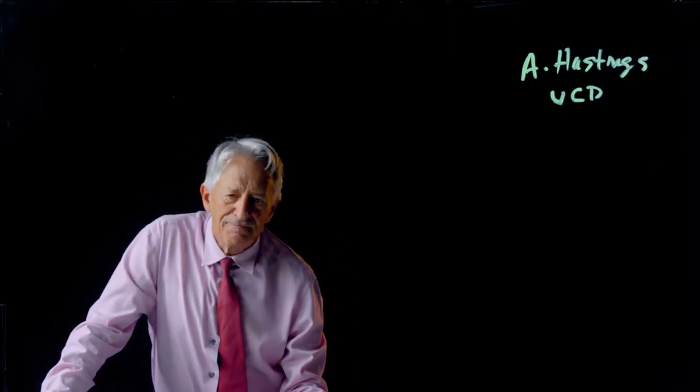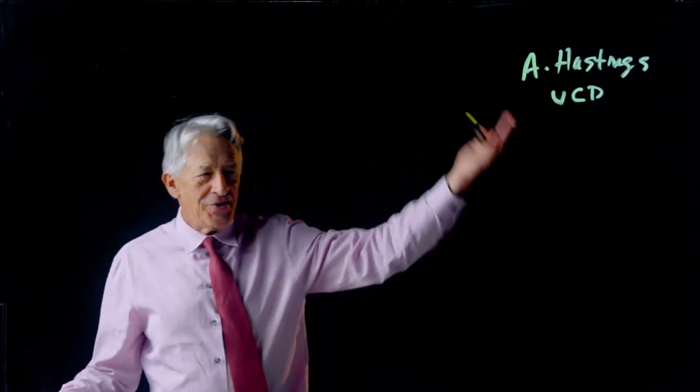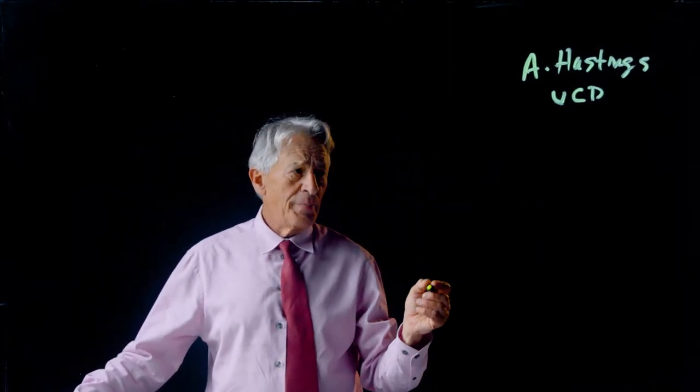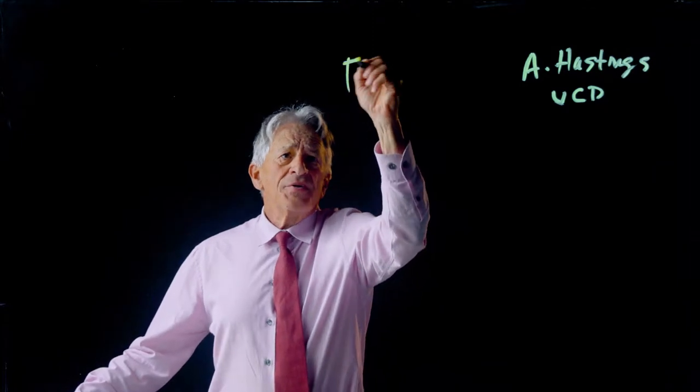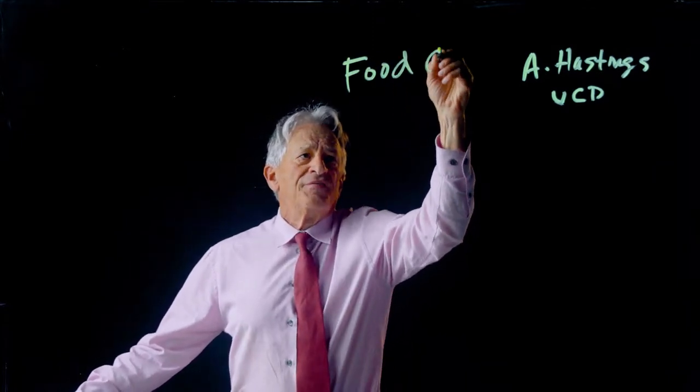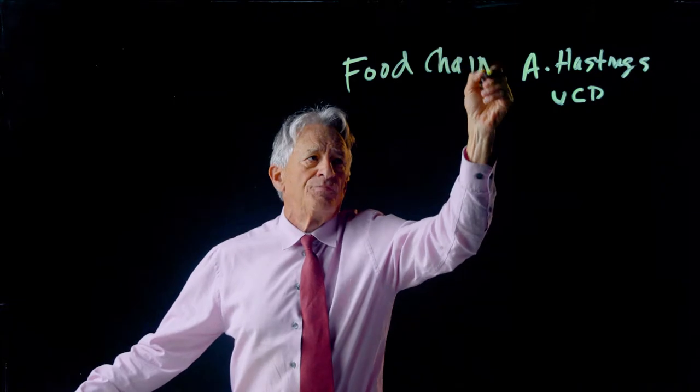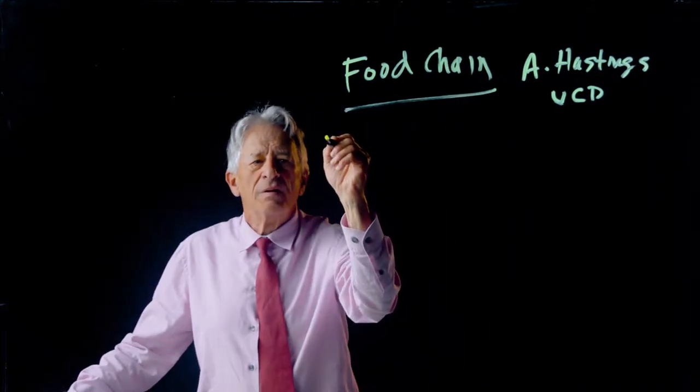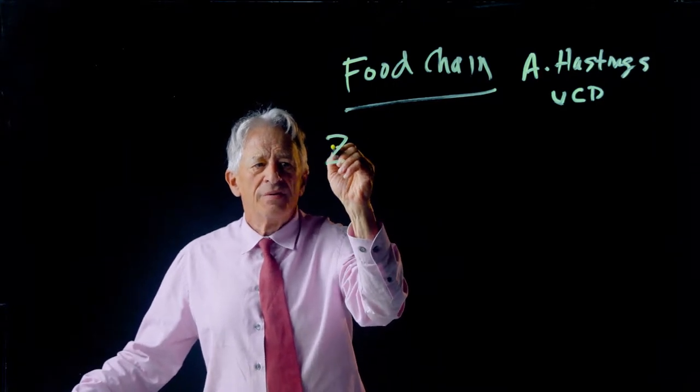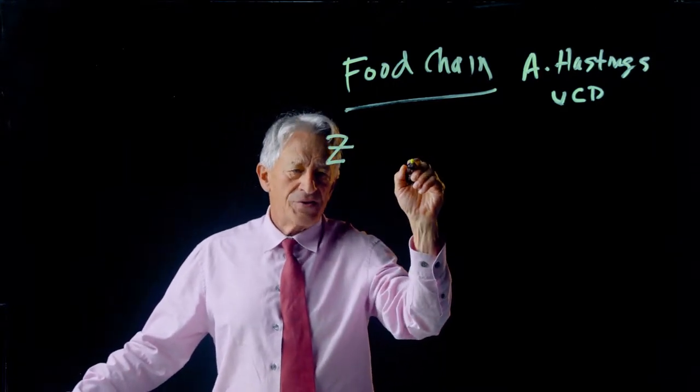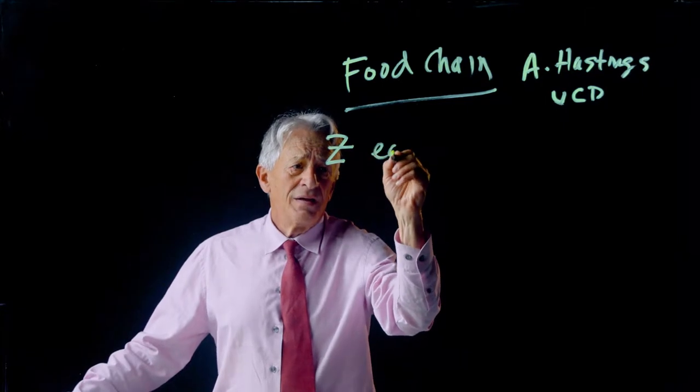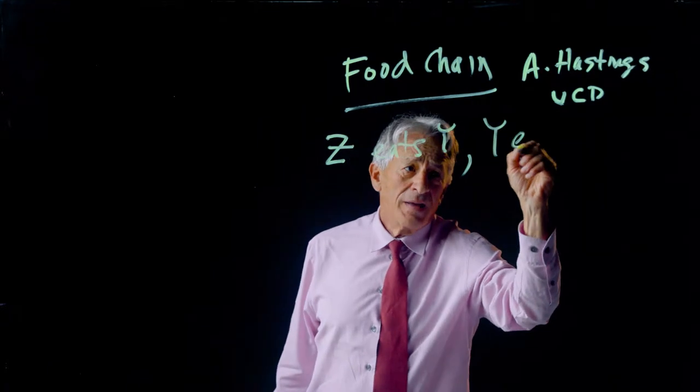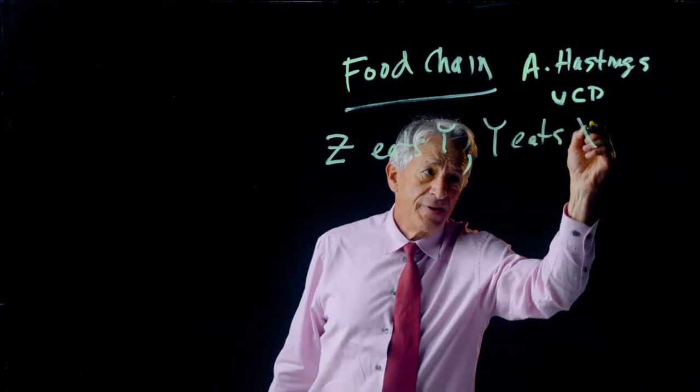The Hastings model is a very interesting extension of the Holling-Tanner model. Because this is a model of a food chain. And very simply, we have three species. Z, X, and Y. And Z eats Y, and Y eats X.